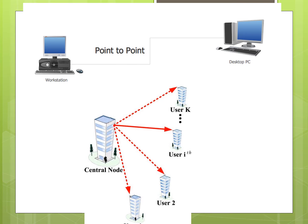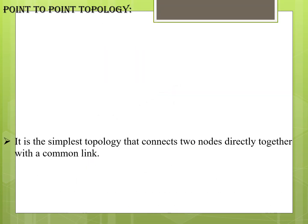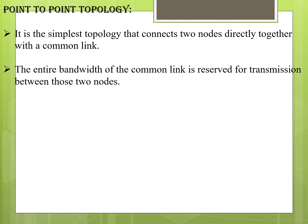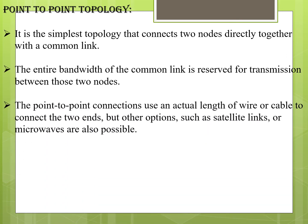Point-to-point topology is very simple, easy to construct, has no errors, and the data transmission speed is fast. The main disadvantage is it can only be used for smaller areas because only two control nodes are used. It is the simplest topology that connects two nodes directly together with a common link, and the entire bandwidth of the common link is reserved for transmission between those two nodes.